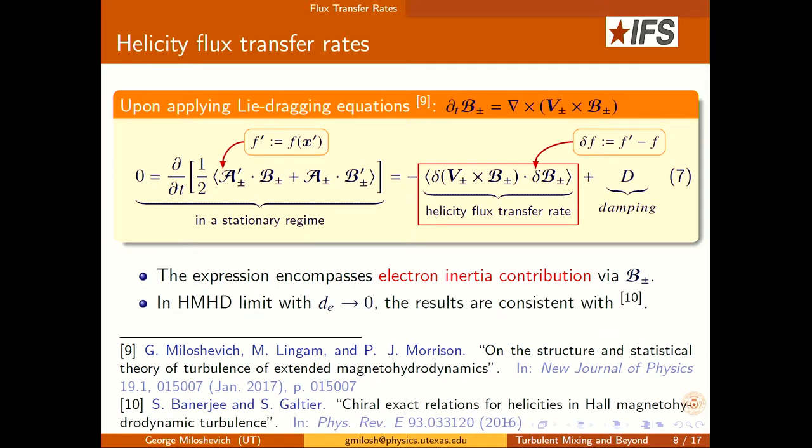It's important to point out that while this expression looks very similar to the one obtained by Banerjee and Galtier, it has more physics in it — specifically the electron inertia that wasn't present before. Of course, in the Hall MHD limit when you set DE equal to zero, you recover their results.